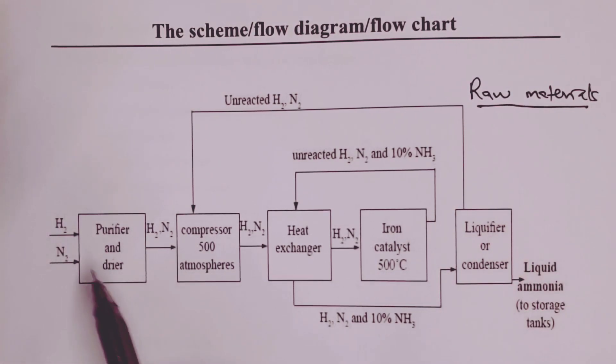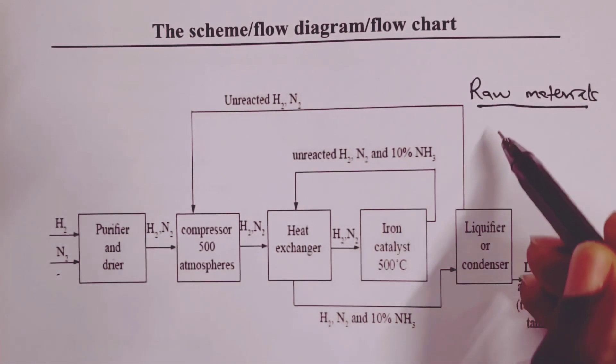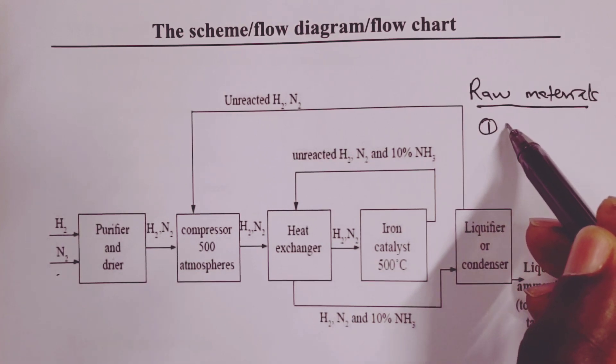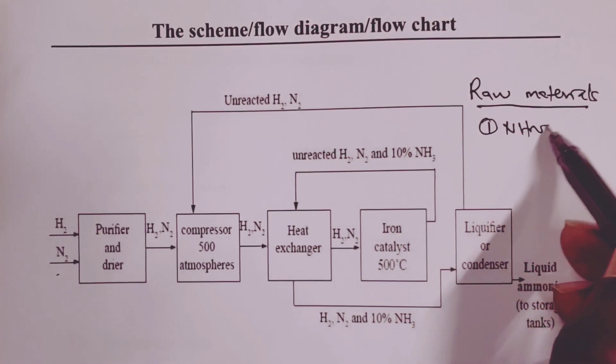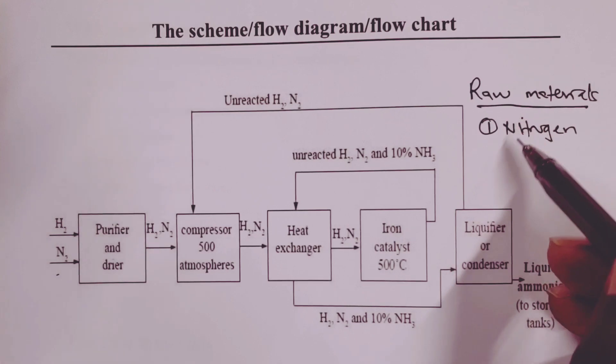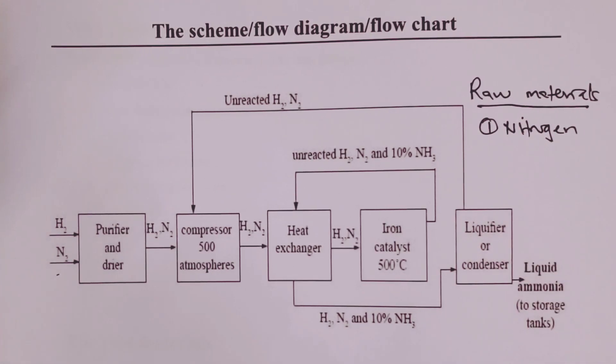And these raw materials come in on the far left here. So we have the first one being nitrogen of course gas. Nitrogen used in this process is obtained from the atmosphere using fractional distillation of air.